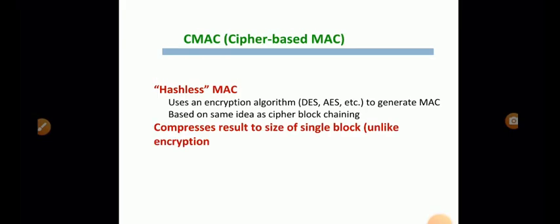So next is CMAC, that is cipher based MAC. It is a hashless MAC. It uses an encryption algorithm. Either it uses DES or AES algorithm to generate MAC based on same idea as cipher block chaining. So it compresses the result to size of the single block. Unlike encryption, it is normally in encryption we are not going to compress the data. Here it compresses the result to size of the single block.